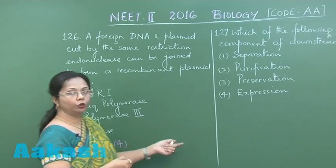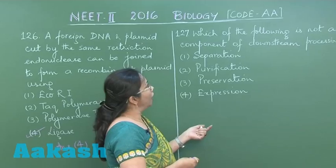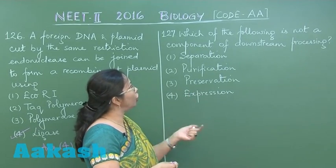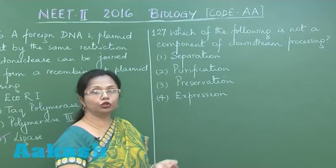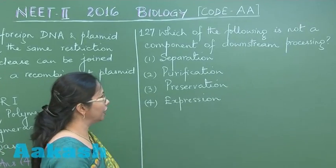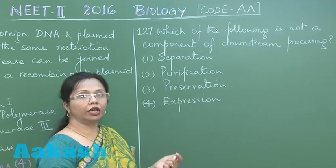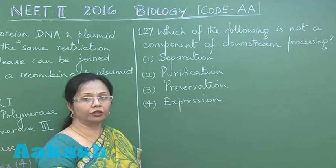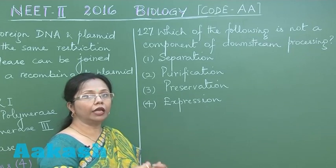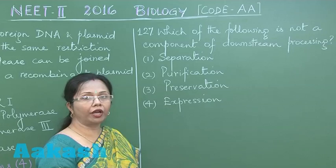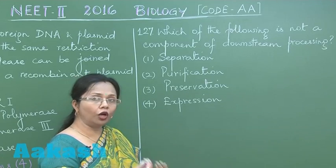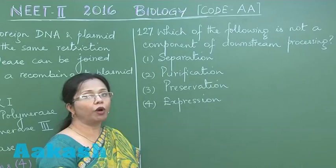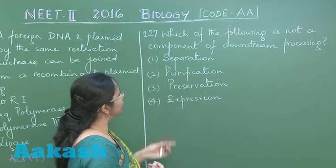Moving to question 127: which of the following is not a component of downstream processing? Downstream processing is the stage after the product of interest has been formed in the bioreactor — it involves separation, purification, and alteration by addition of preservatives so it can be marketed.